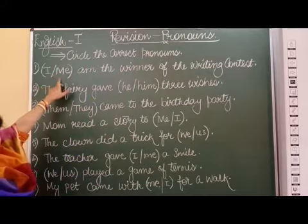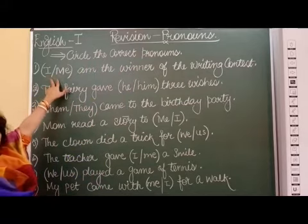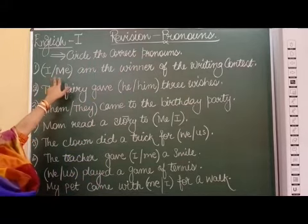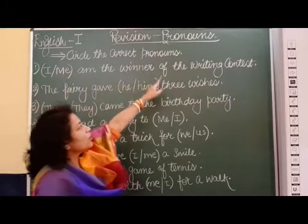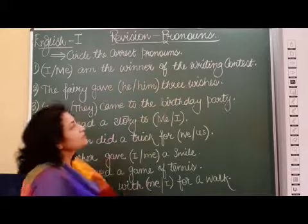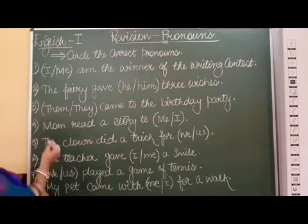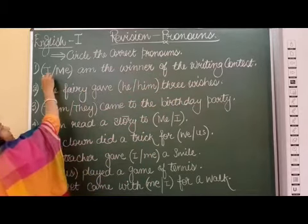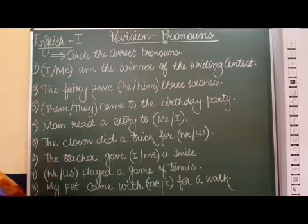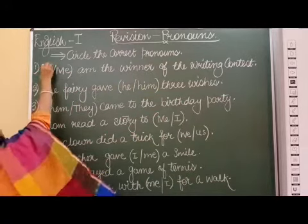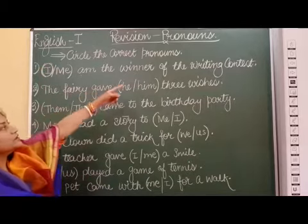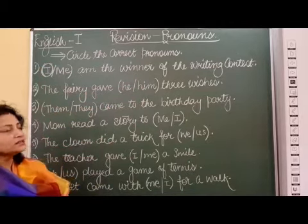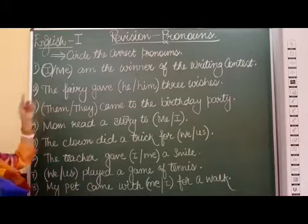I, me, these are the pronouns. We will circle the correct one which relates to the sentence. I, me, am the winner of the writing contest. As you know when we use am it always goes with I. I am. So I will circle I. I am the winner of the writing contest. So here we are going to circle I.